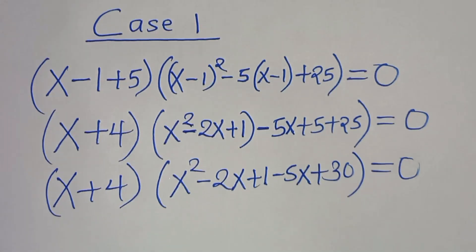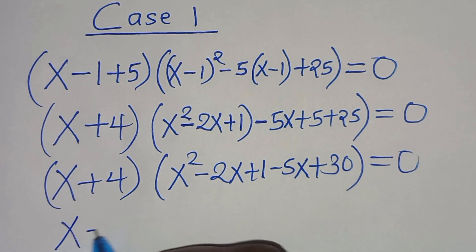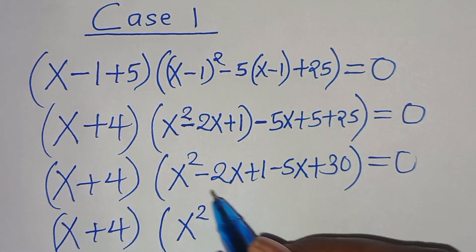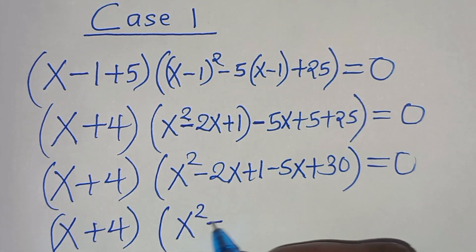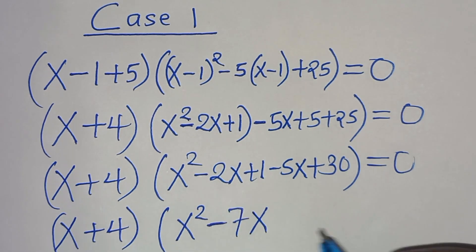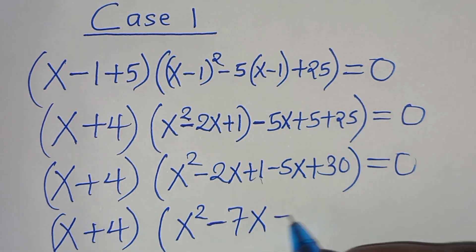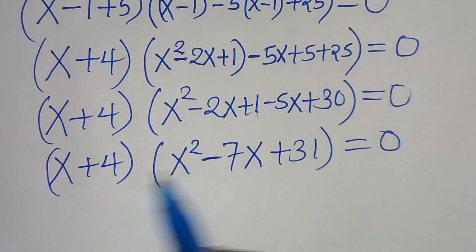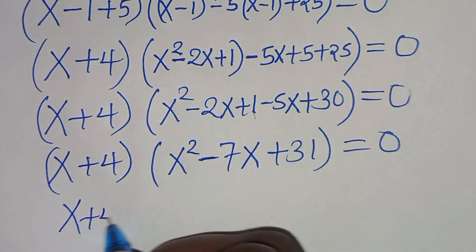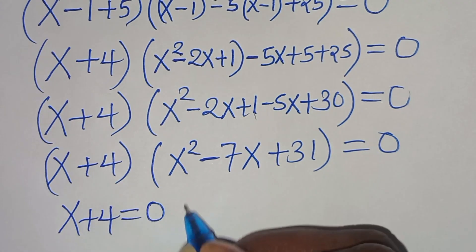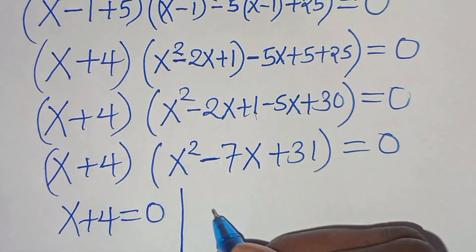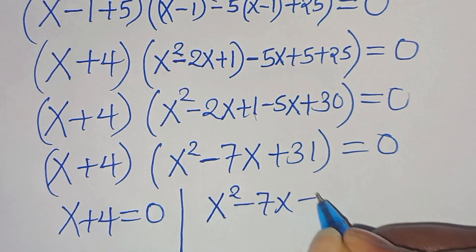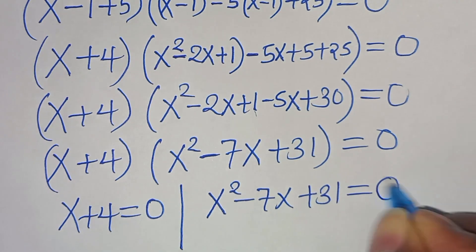Collecting terms inside the bracket: minus 2x minus 5x gives minus 7x, and 1 plus 5 plus 25 gives 31. So we have (x plus 4)(x² minus 7x plus 31) equals 0.